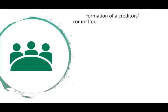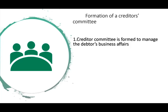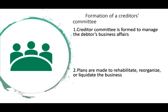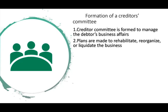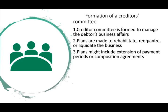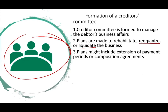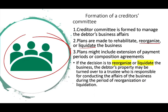Another option is to form a creditors' committee — a group brought together to manage the debtor's business affairs. They make plans to either rehabilitate, reorganize, or liquidate the business. The committee might extend the period or reach a composition agreement. If they decide to go into reorganization (Chapter 11) or liquidation (Chapter 7), the debtor's property may be turned over to a trustee who is responsible for conducting the affairs of the business during that period.